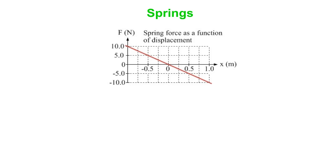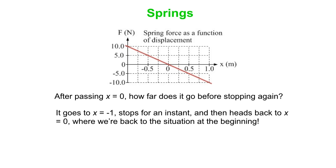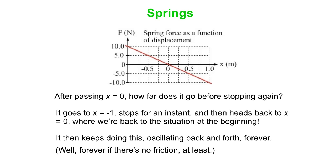So after it goes through x equals 0, how far does it go before it stops? So it starts at 0, goes out to x is plus 1, stops for an instant, comes back, passes through 0, goes out to x is minus 1, stops for an instant, goes back to 0, and then we're back to the beginning, and it all repeats. So this is how the oscillation happens. And this will go on forever and ever, as long as there are no resistive forces like friction and air resistance.